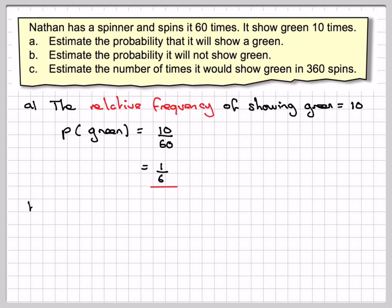Estimate the probability it will not show green. So the probability it will not show green is 1 minus the probability it does show green. So that is going to be 1 minus 1 sixth. 1 minus 1 sixth is 5 sixth.